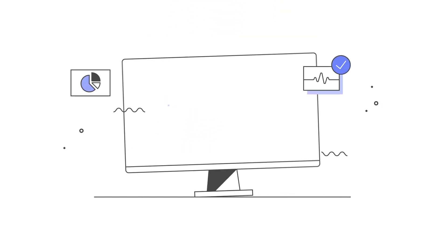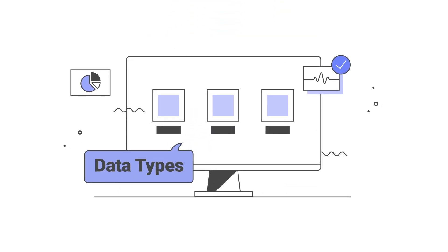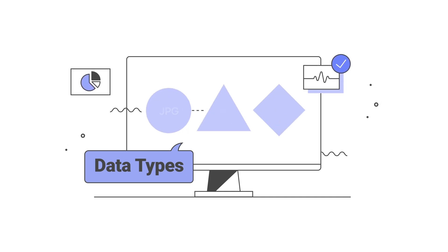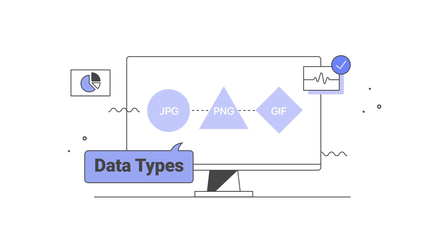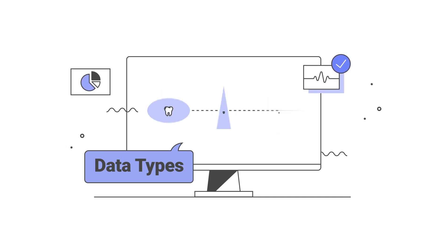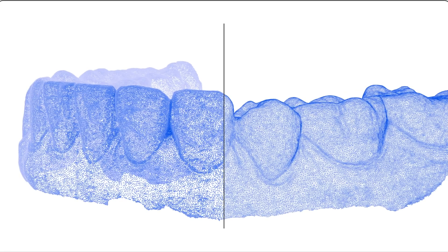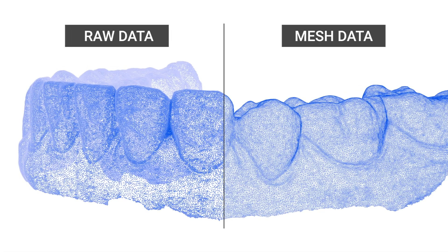Now we'll look at the types of scan data saved in MeditLink. Scan data has various file types like images: jpg, png, gif, etc. In MeditLink, you'll see two types of scan data: raw data and MeditMesh data.